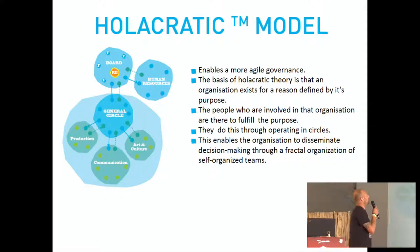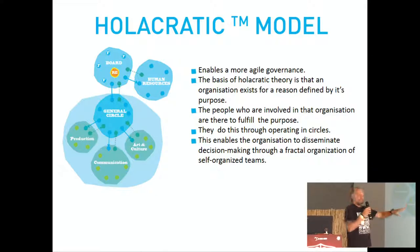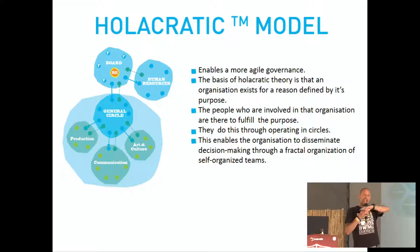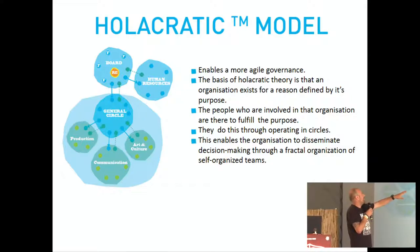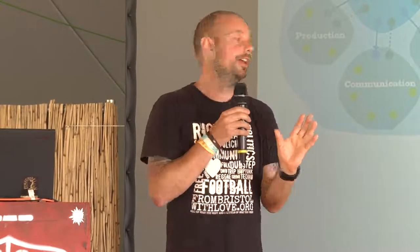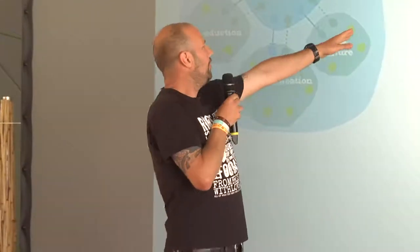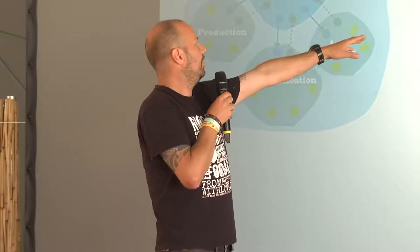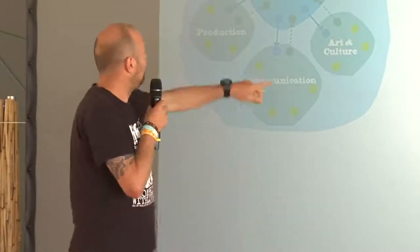A holacratic model enables your organization to be far more agile — able to respond more quickly and in a much more flexible way. The basis of holacratic theory is that an organization exists for a reason defined by its purpose, which is why having a clear purpose at the very beginning is extremely important, because that purpose defines how everything else then operates. It's also based on the idea that the people involved in that organization are there to fulfill the purpose, and they do this through operating in circles.